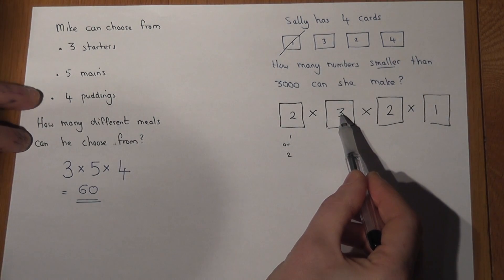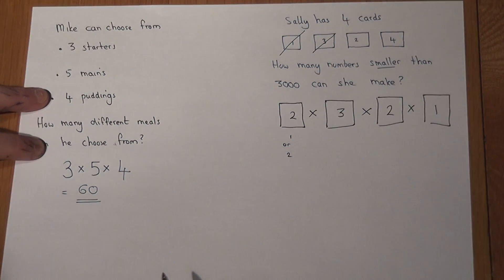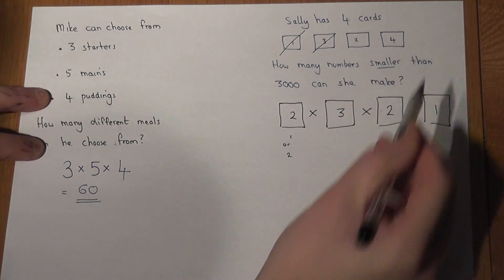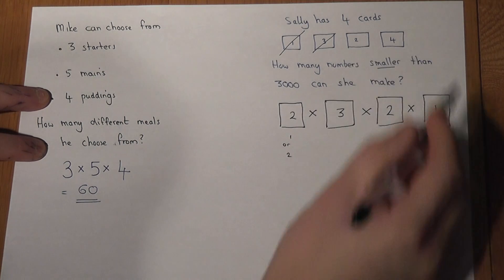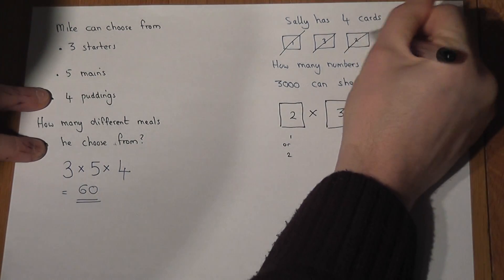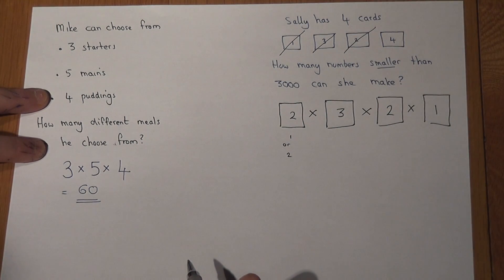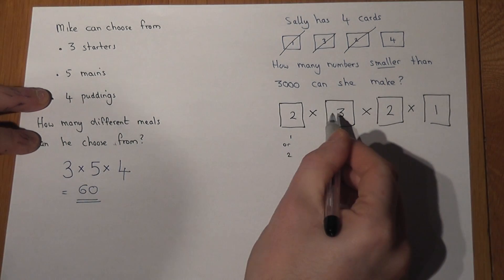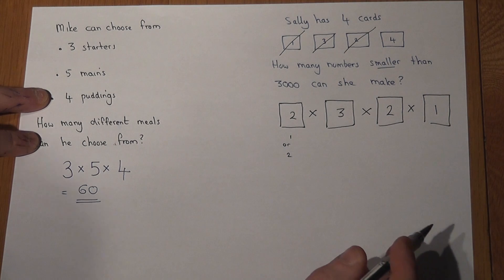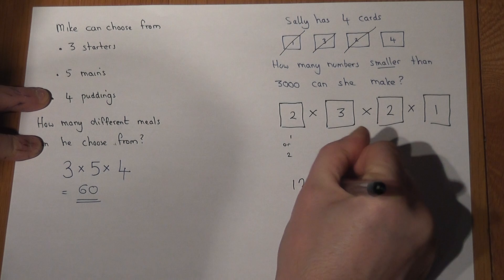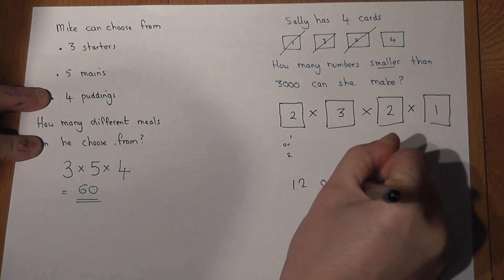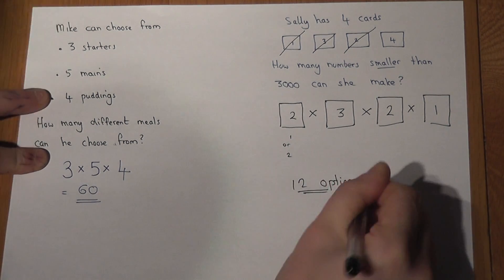Having picked one of those three choices, for example the 3, there's only two cards left, so there were just two choices for the next card. And having picked one of those, there's then only one option left. So the number of options are 2 times 3 times 2 times 1, which is just 12 options.